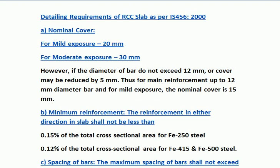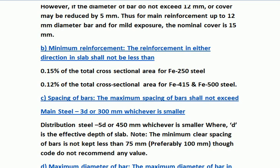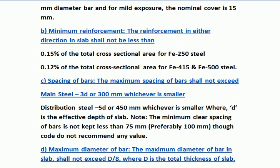Next is spacing of bars. The maximum spacing of main steel bars shall not exceed 3D or 300 mm, whichever is smaller. For distribution steel: 5D or 450 mm, whichever is smaller, where D is the effective depth of slab. The minimum clear spacing of bars should not be less than 75 mm, preferably 100 mm. The maximum diameter of bar in slab shall not exceed D/8, where D is the total thickness of slab.